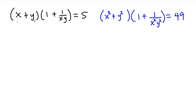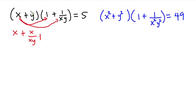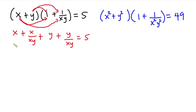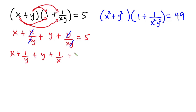First of all, I'm going to multiply out the first equation. So we have x times 1 is x, then plus x times 1 over xy is x over xy, then plus y times 1 is y, then plus y times 1 over xy is y over xy, and this is equal to 5. Now you can see that this x will cancel this x, then this y will cancel this y. So we have x plus 1 over y plus y plus 1 over x, and this is equal to 5.